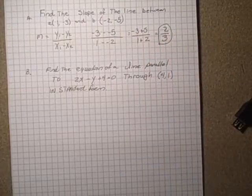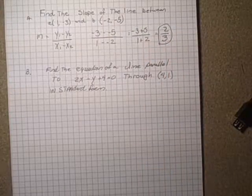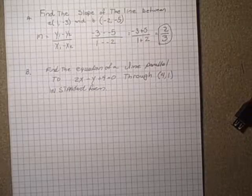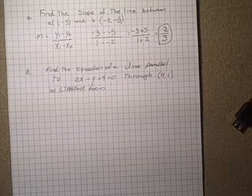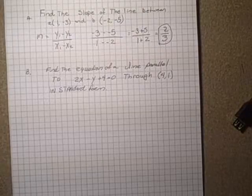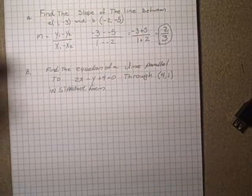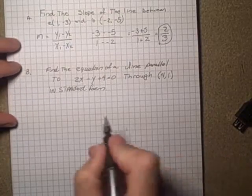That's the basic example of how to calculate slopes. In the next question, we're going to do a little more complex work. Find the equation of a line parallel to 2x - y + 4 = 0 through the point (4, 1) in standard form. The first step is to find the slope of the line given to you.